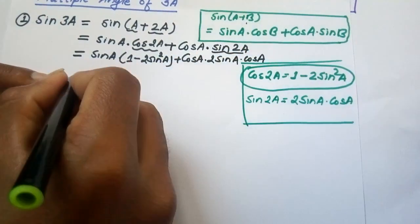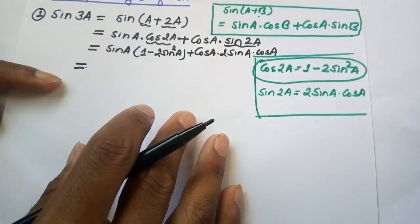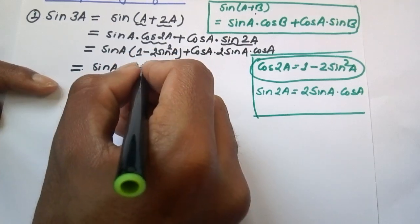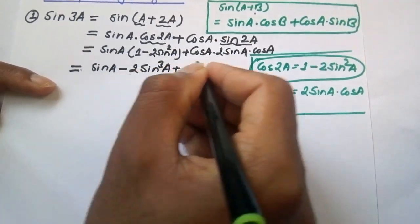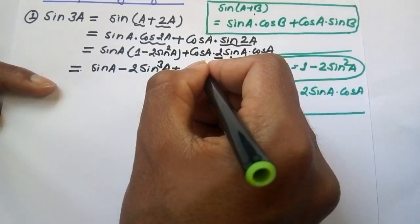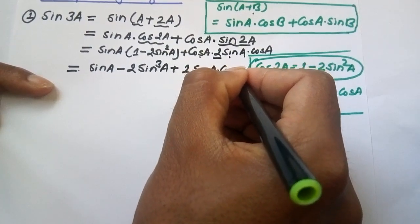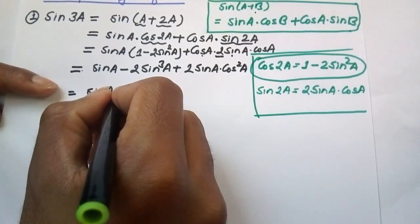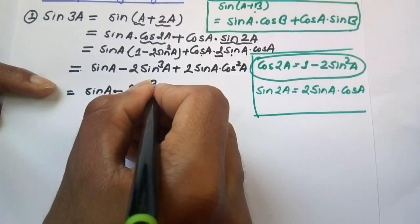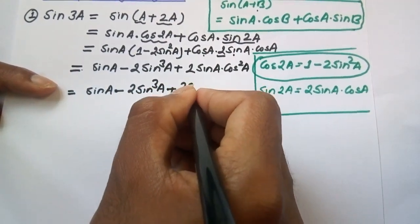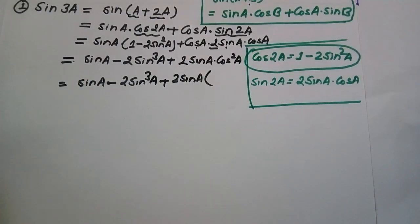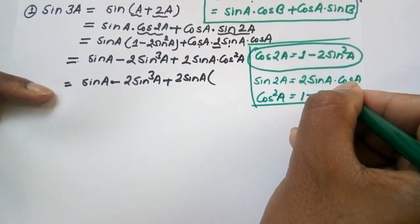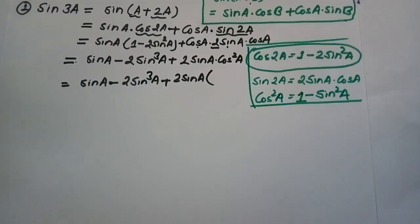So sine 2a is replaced by 2 sine a dot cos a. Further simplifying: sine a into (1 minus 2 sine square a) gives sine a minus 2 sine cube a. Then plus 2 sine a, and cos a into cos a gives cos square a.